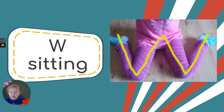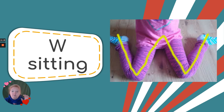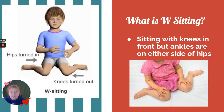Here is a major push: W-sitting. What is W-sitting? It's when children sit with their knees in front and their feet on either side of their hips, so that looking from above it looks like a W. It's a very common position for a lot of children, but I'm going to talk about why you should never let it happen.